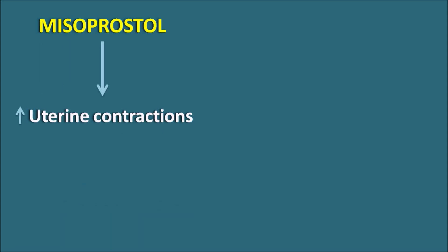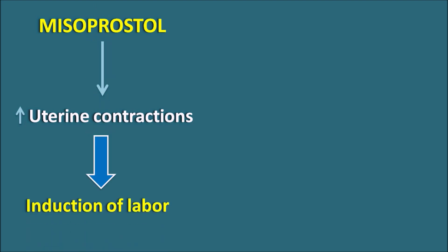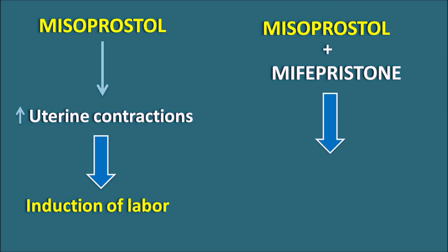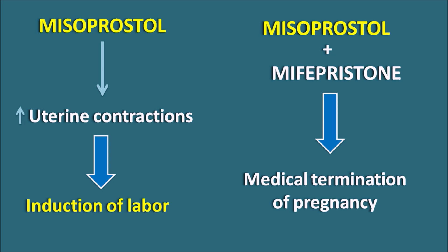Apart from this, misoprostol also has other pharmacological actions. It can increase uterine contractions, and that is why it can be used to induce labour — it is a uterine stimulant. When given in the first trimester, it increases uterine contractions and can produce abortion in a pregnant woman. Misoprostol is combined with mifepristone, an antiprogestin, for the medical termination of pregnancy. Therefore, when misoprostol is indicated for NSAID-induced gastric ulcers, it should not be given to pregnant women.